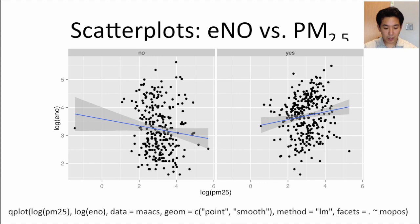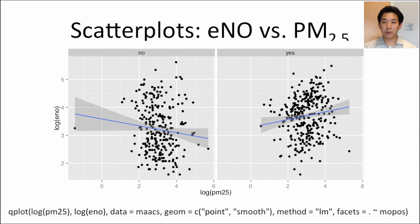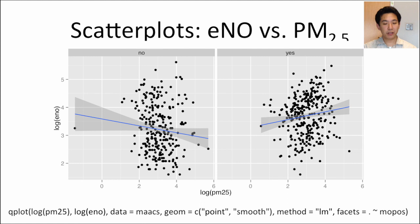Another way to look at the same data is to split it out with facets — rather than overlapping the two groups with color-coding, I split them into two separate plots using the facets argument, specifying two columns designated by the mouse-positive variable (no and yes). I then smooth the relationship within each panel. The same story emerges: among mouse-negative children there's a small decreasing relationship, and among mouse-positive children there's a slight increasing relationship.